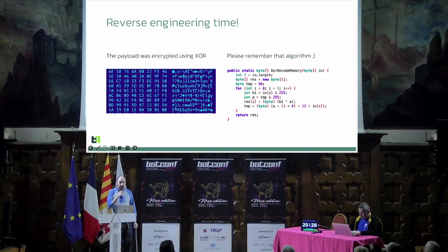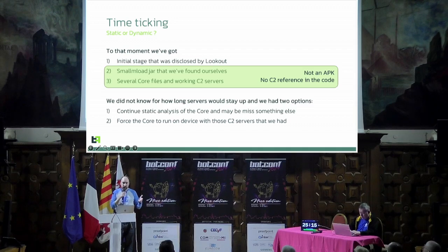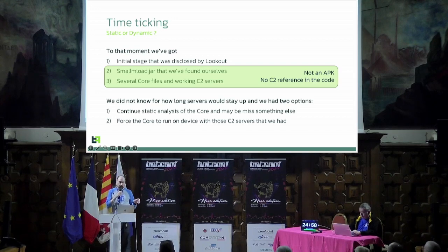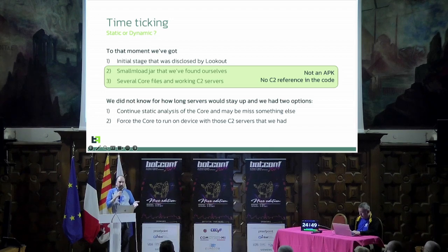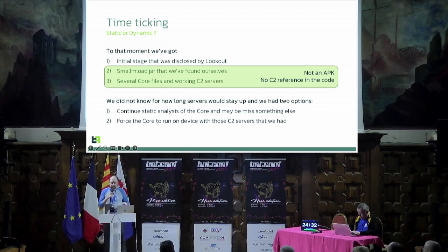At that point I had the initial stage published by Lookout, and I had two separate payloads which are not APK files — you cannot directly run them on the device. The problem is these payloads don't contain a C2 address, so they cannot act separately. I had two approaches: static analysis — reverse-engineer the core, look at functionality and commands — but in that case I don't know how long the C2 will stay up. So should I go static, or somehow trick the core into running on a device?